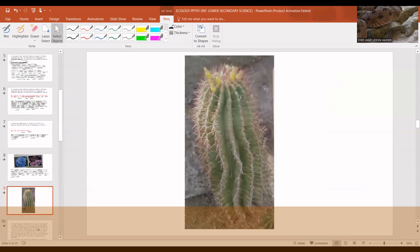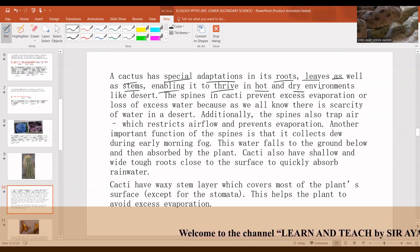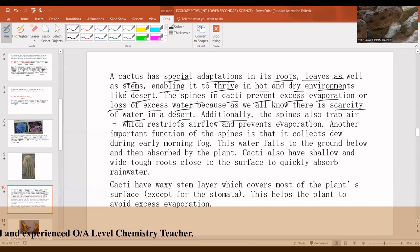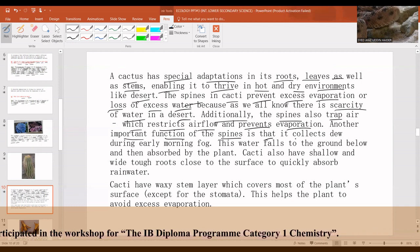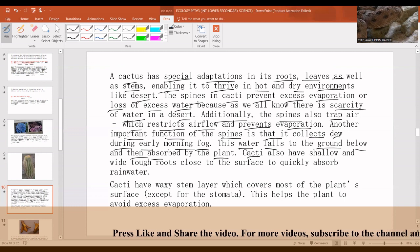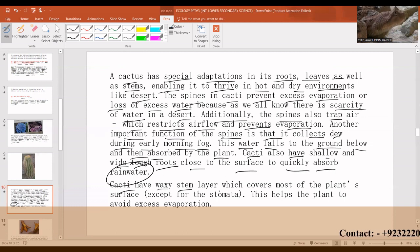This is a plant usually found in desert. It's known as cactus. A cactus has special adaptations in its roots, leaves, as well as stems enabling it to thrive in hot and dry environments like desert. The spines in cacti prevent excess evaporation or water loss because there's scarcity of water in a desert. Additionally the spines trap air which restricts airflow and prevents evaporation. Another important function of these spines is that they collect dew during early morning fog. This water falls to the ground below and then is absorbed by the plant. Cacti also have shallow and wide tough roots close to the surface to quickly absorb rainwater. Cacti have a waxy stem layer which covers most of the plant's surface except for the stomata. This helps the plant avoid excess evaporation.